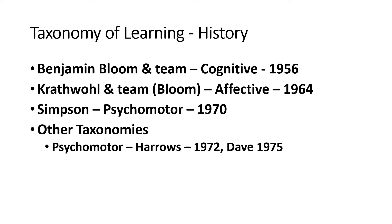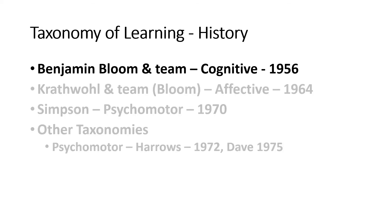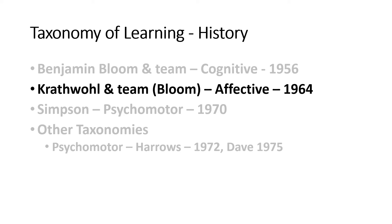Let's look at a little of the history of taxonomy. Benjamin Bloom and his colleagues developed the cognitive domain in 1956. The affective domain was also developed around the same time, but underwent further modifications. Krathwohl and his colleagues, which included Bloom, published the Affective Domain Taxonomy in 1964.